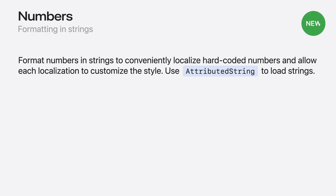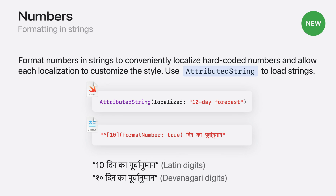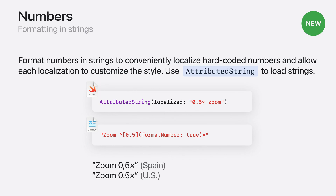Here are two ways you can localize this. The first is by formatting the number in code using interpolation — because it's inside text, number of days will automatically be formatted for the current locale. This year, we're also introducing a second way to format numbers directly in strings. The biggest benefit is that it allows you to easily format numbers within localized strings with zero code. In this example, the source string is in English and the translated string in Hindi uses format number, which ensures that the correct numbering system will be used at runtime, respecting the number setting in language and region settings. It can also handle decimal separators, so for Spanish, a single string can be used for both Spain and the US.